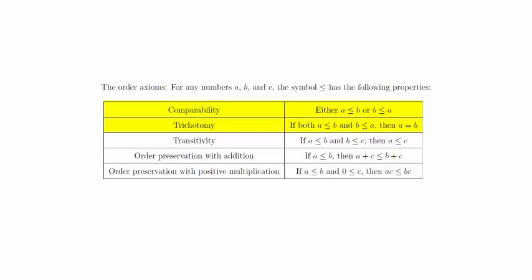Comparability and trichotomy are properties that allow you to compare any two numbers in exactly one way. Transitivity states that if you have a small number, a big number, and an even bigger number, then the small number is still smaller than the bigger number. Order preservation is just a matter of the inequalities not changing when you add a number or when you multiply by a positive number.